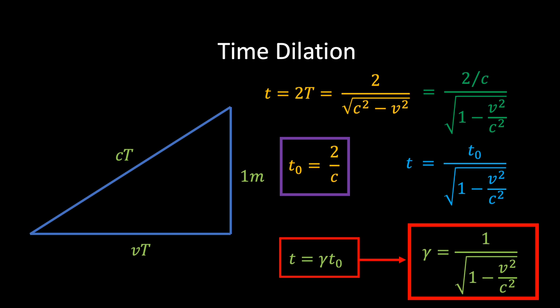What is this expression telling us? If v equals zero, then γ equals 1 and t equals t₀ — two stationary clocks tick at the same rate. If v is greater than zero, the square root in γ is less than 1, so γ is greater than 1, meaning the time for the tick-tock of the moving clock is greater than that of the stationary clock. Not only does this particular clock run more slowly, but if the principle of relativity is correct, any other type of clock must also run slow by exactly the same amount.